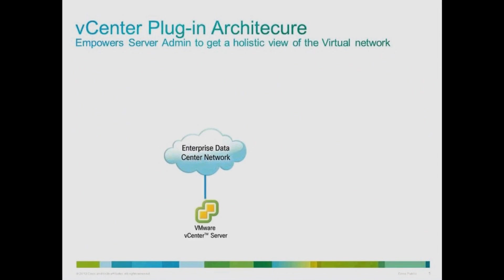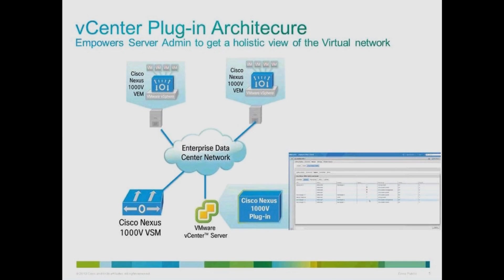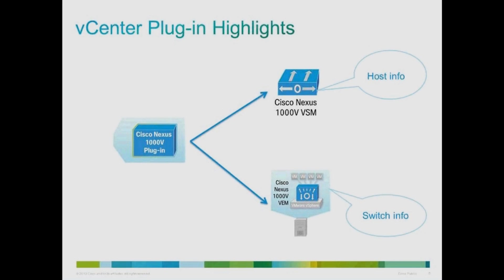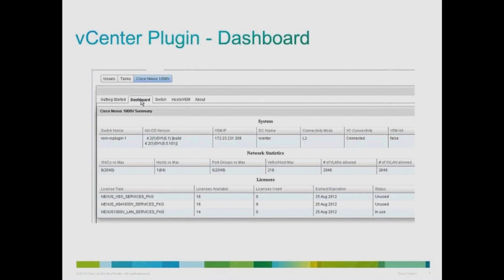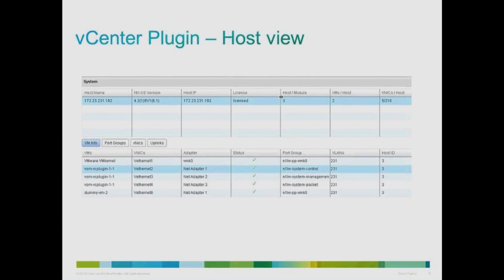In your data center network with the vCenter plugin installed seamlessly into the environment that has VSM and VEM, the vCenter plugin will provide vital information on the data center network by polling the VSM and VEMs. The plugin provides information at two different levels: the host view tied to the VSM level and the switch view tied at the VEM level. In addition, the plugin also provides a dashboard view. In the dashboard view, besides other global information, you will be able to see scalability and license information. You will be able to view utilization of resources in your network, thereby providing operational efficiency.